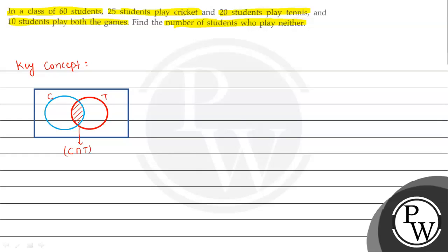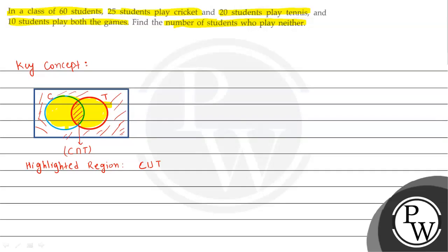The common region is known as C intersection T, which means people who play both games. The highlighted region is known as C union T. The shaded region outside is known as C union T complement.